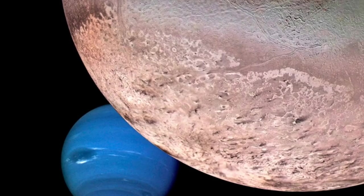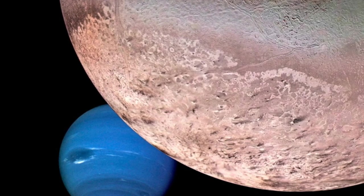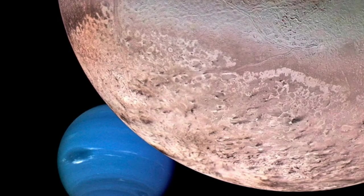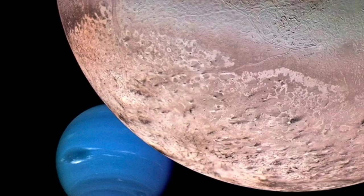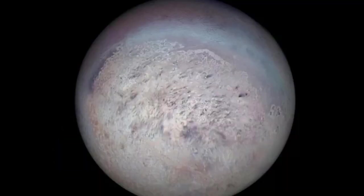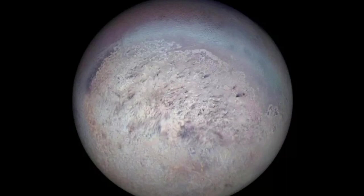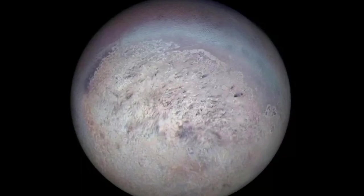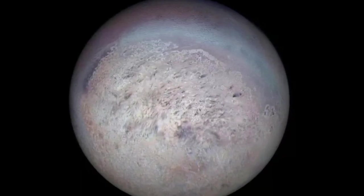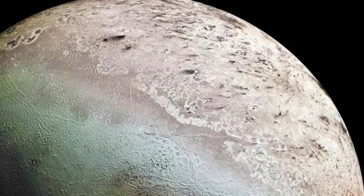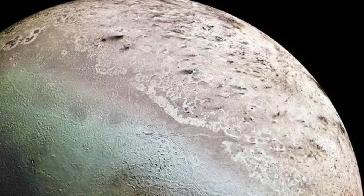Triton is the largest moon of Neptune, and one of the most geologically active bodies in the solar system, together with Venus and Jupiter's moon Io. It has a very thin atmosphere composed mostly of nitrogen, and is the coldest known planetary body in the solar system, with temperatures as low as minus 235 degrees Celsius. Its surface is covered in a variety of features, including mountains, valleys, and craters.